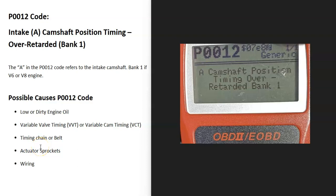Today I'm talking about a P0012 code — what it is and how you go about fixing it. A P0012 code is the intake camshaft position timing over-retarded, bank one. There are different components that manage the timing inside of an engine: sensors, timing belts or timing chains, variable valve timing, and the onboard computer is seeing an issue with one of these.